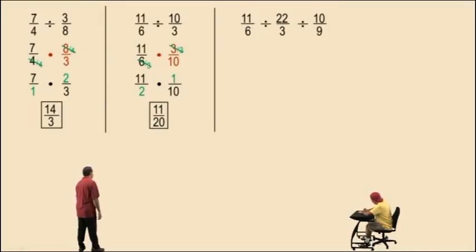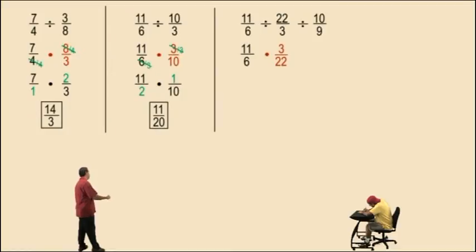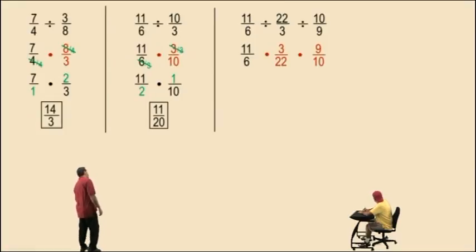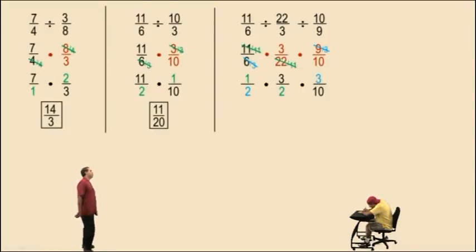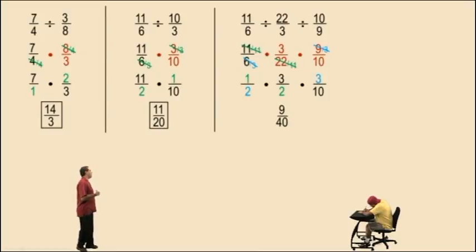Here we have eleven-sixths divided by twenty-two-thirds divided by ten-ninths. Eleven-sixths remains unchanged. Dividing by twenty-two-thirds becomes multiplying by three over twenty-two. Dividing by ten-ninths becomes multiplying by nine-tenths. Now we look for common factors: eleven and twenty-two have a common factor of eleven, so they become one over two. Nine and six have a common factor of three, so they become three over two. Three and ten have no common factors, so we bring down that work. In the numerator we have one times three times three, which is nine. In the denominator we have two times two times ten, which is forty. And there's our answer: nine over forty.